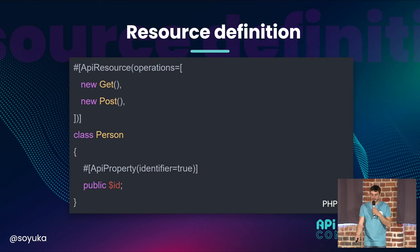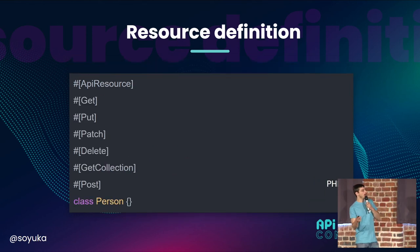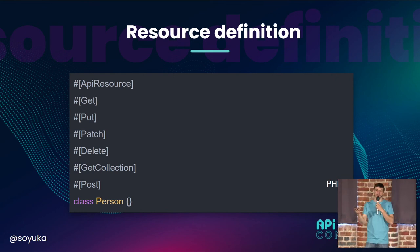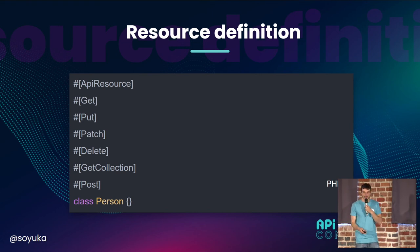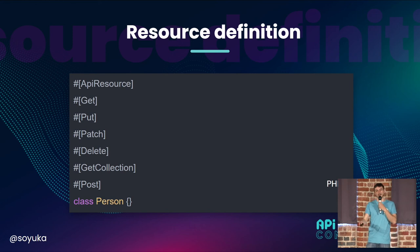In PHP 8, it would look like this. For one API resource, you usually generate a CRUD — create, read, update, delete. And I have detailed all the operations with PHP attributes.